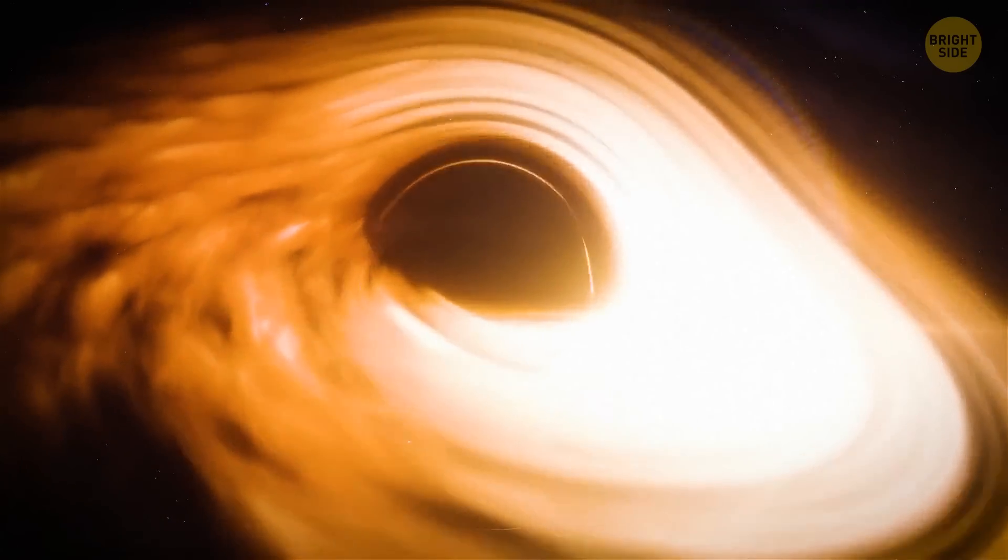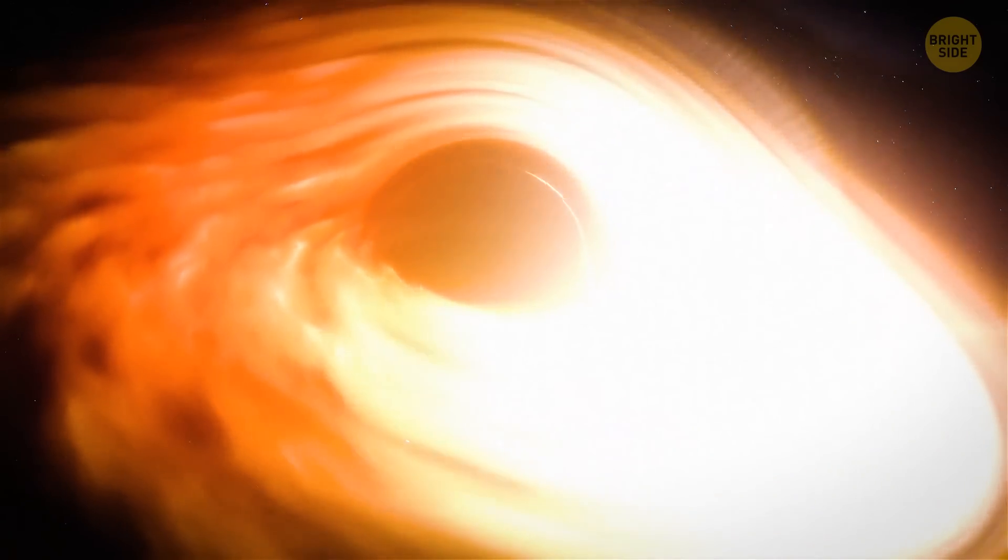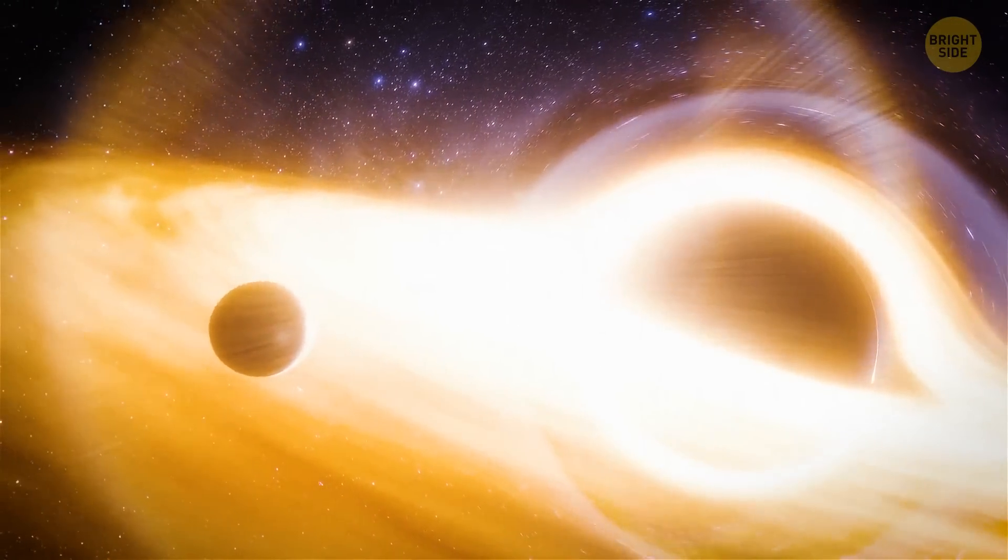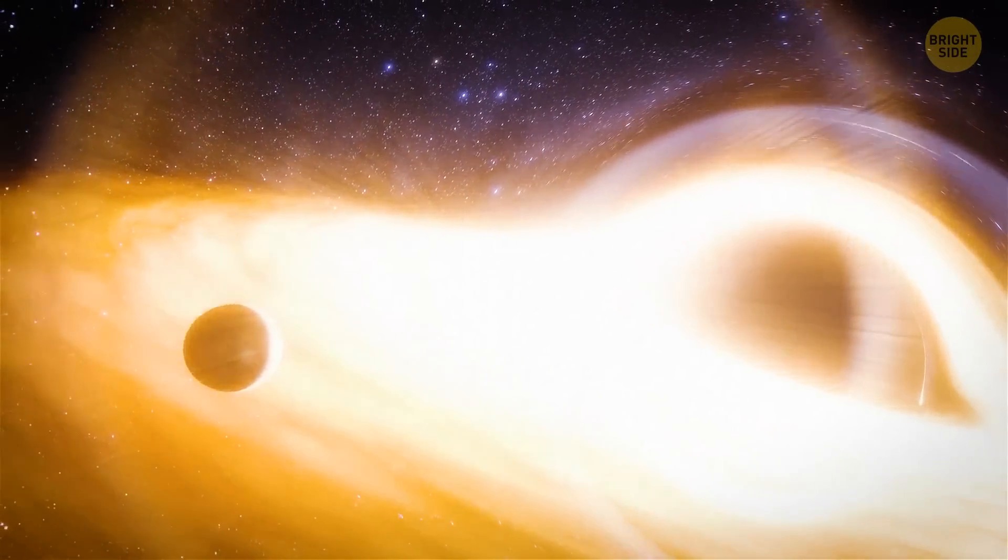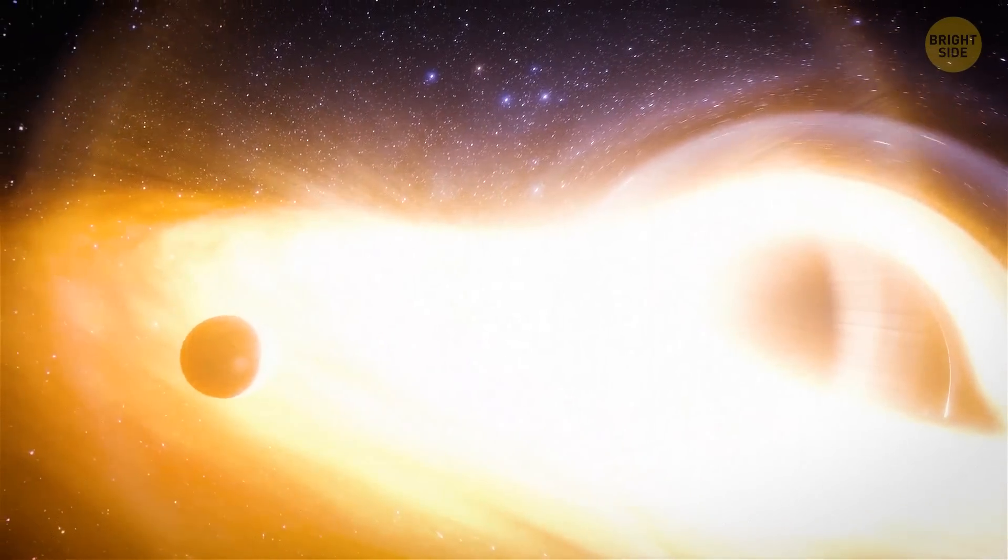But that's not all. Strong magnetic fields produced in the process channel the matter to the poles of the black hole, and from time to time this matter is blasted out of there in twin powerful jets. They move at a speed that is close to the speed of light, which generates incredibly bright light.